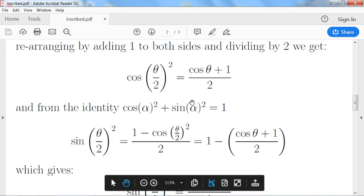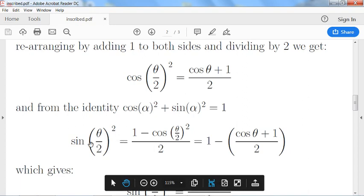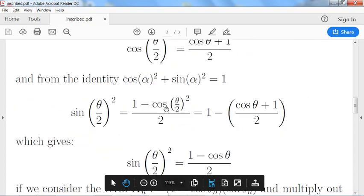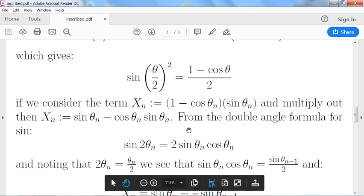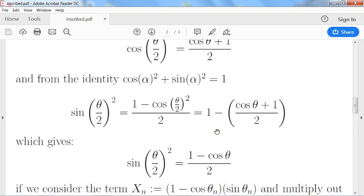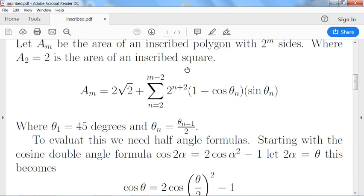So anyway we substitute in here for the θ over 2 for α in that formula, and then we just rearrange and then what we get is sine squared θ over 2 is one minus cos θ over 2.